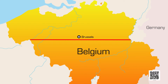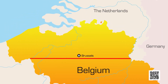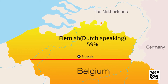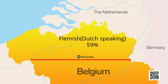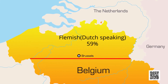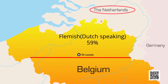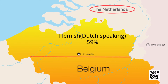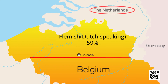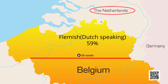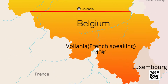As you are watching the map of Belgium, it is divided into mainly two parts: Northern and Southern. The northern part of Belgium is called Flemish and the people who live here speak Dutch. In the north of Belgium is Netherlands and Dutch is also spoken there. These people constitute 59% of the total population.